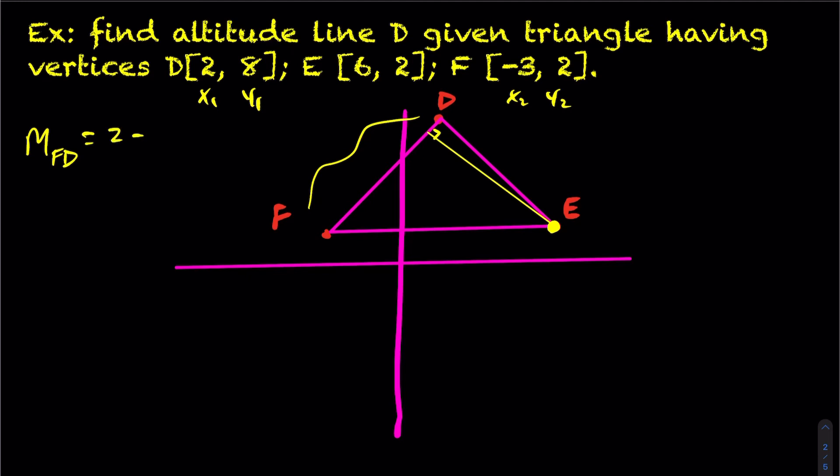So if I calculate my slope here, I'm going to get 2 minus 8 over negative 3 minus 2 is negative 6 over negative 5 is 6 fifths. So the slope of line segment FD is 6 fifths. Now the slope that I want is perpendicular, so the perpendicular slope is the negative reciprocal. So we flip it and change the sign, and now I have the slope of altitude line E. So therefore, my equation is y is negative 5 over 6x plus my y-intercept that I don't know.